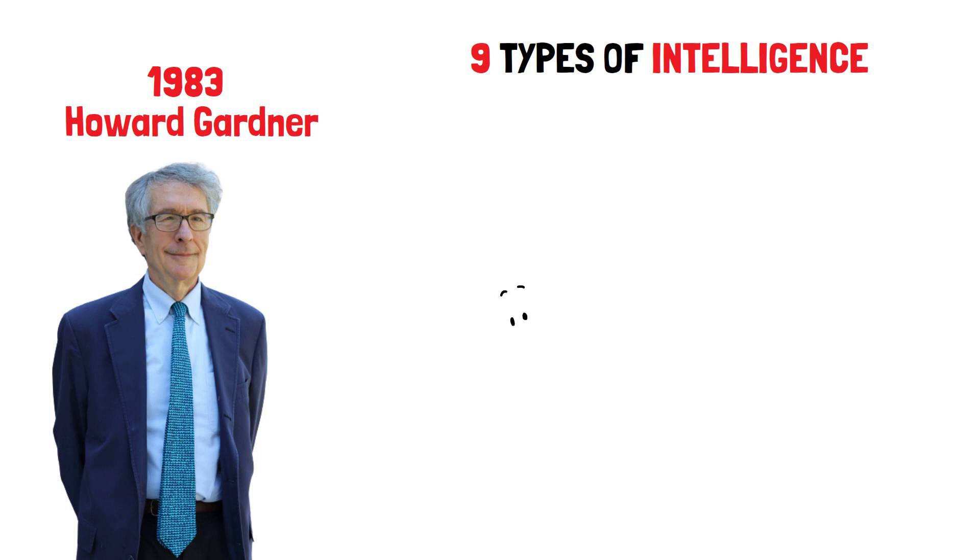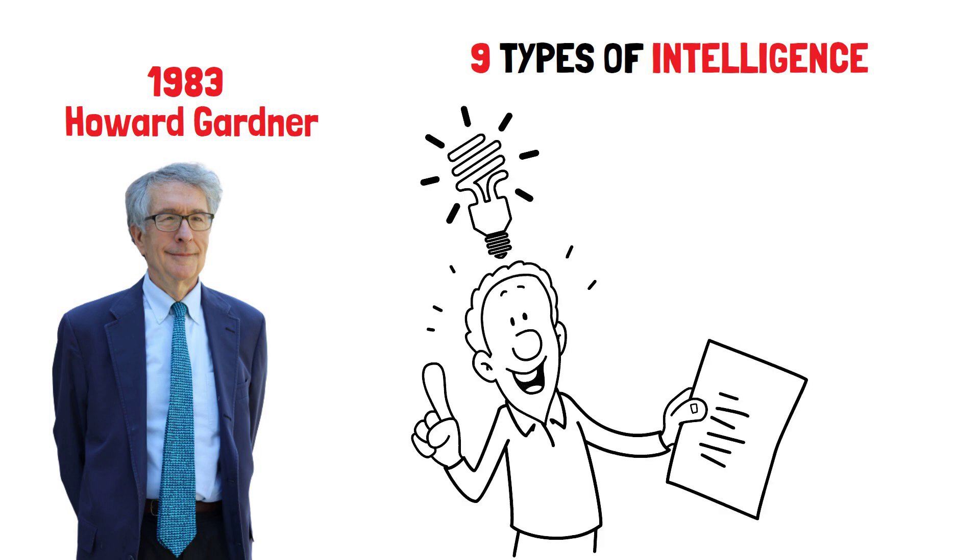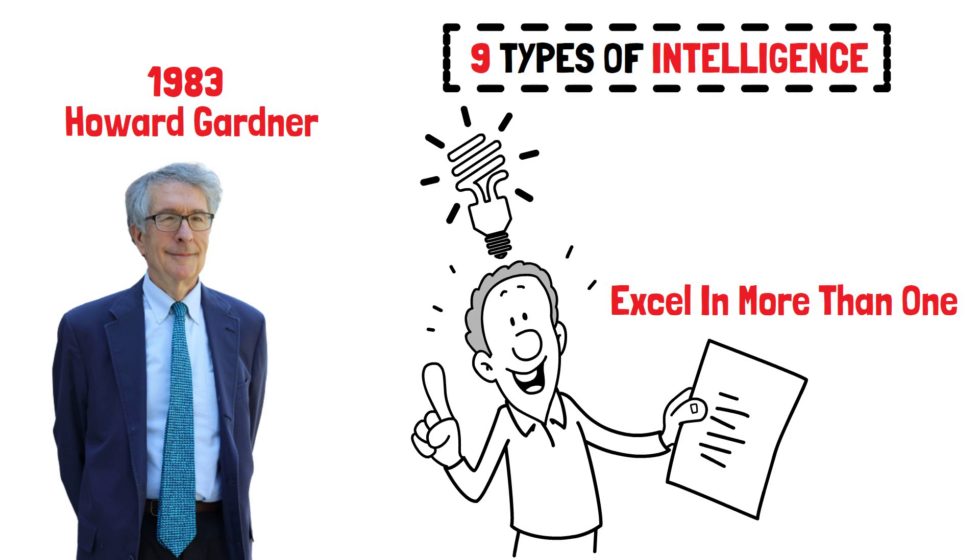and he came up with this idea about nine different types of intelligence that people can possess. Each of these types represents an area where you might shine, and it's totally possible to excel in more than one. Let's take a look at Howard Gardner's nine types of intelligence and see which ones resonate with you.